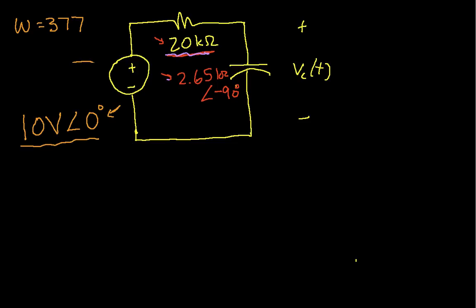What I should have done at the same time is replace this time domain Vc of t, that is, it's a function of time, with V sub c. This is a phasor representation of that same voltage. Because all the computations I'm going to do will involve computing with phasors and impedances.